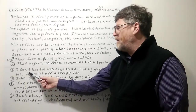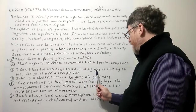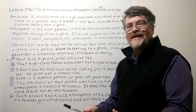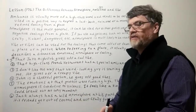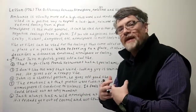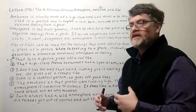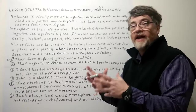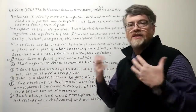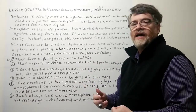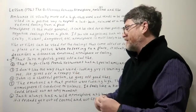The third example: 'I don't like the way that weird-looking guy is staring at me. He gives off a creepy vibe.' This is another example of vibe used for a person — it can be positive or negative. Women often use this expression when a strange guy is staring in an intimidating way, and they might describe him as giving off creepy vibes.